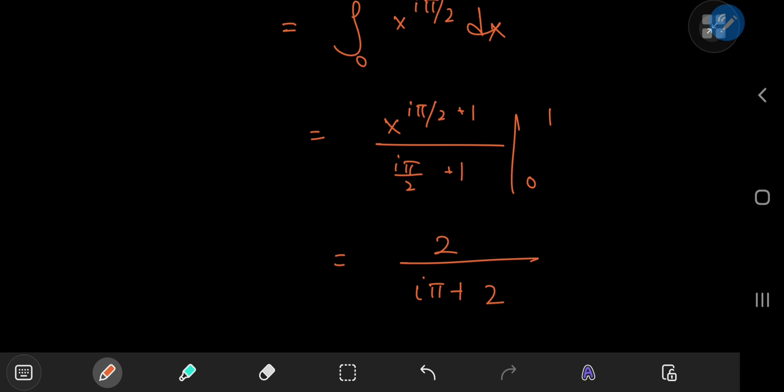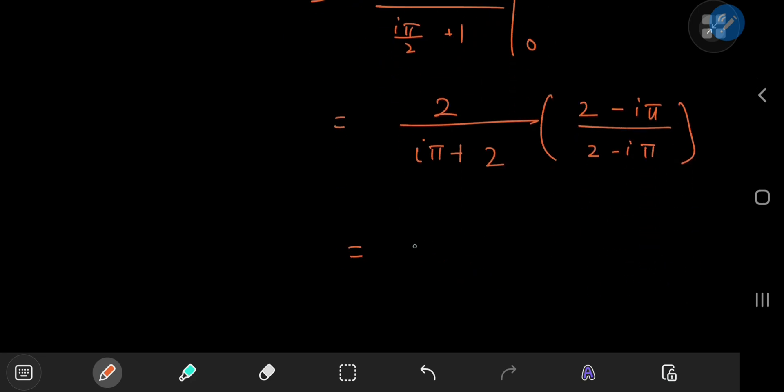And again it would be nice if we separate this into real and imaginary parts. So using the conjugate 2 minus i pi we can write this as 4 minus 2 times i pi divided by 4 minus i squared pi squared which is of course just 4 plus pi squared.